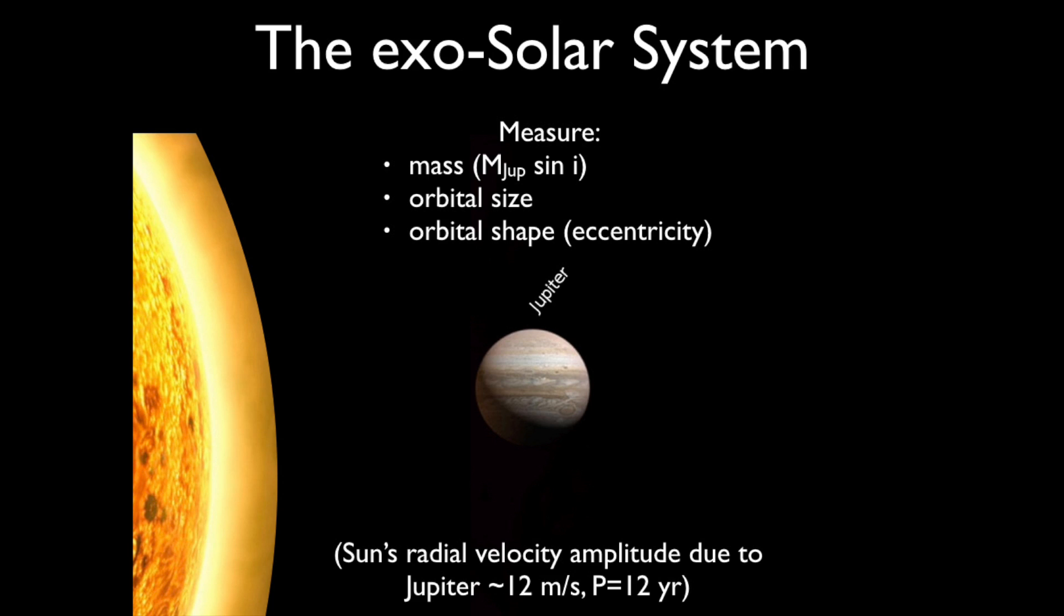Now the question is, if we took the solar system and put it around another star and observed it with present-day Earth technology, what would we see? And it turns out if we do this little experiment, the only planet that we could see is Jupiter. With a long-term radial velocity monitoring program, we could detect Jupiter. We could measure its mass, we could measure its orbital size, and its orbital shape.